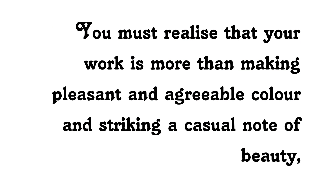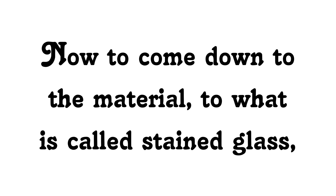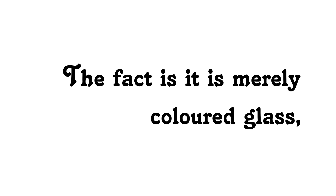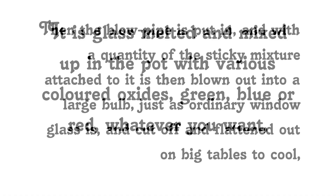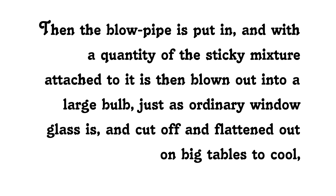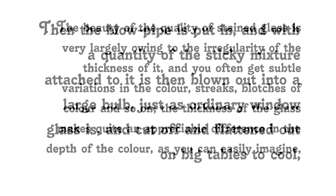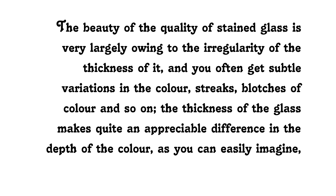Now to come down to the material — to what is called stained glass. The fact is it is merely coloured glass. It is glass melted and mixed up in the pot with various coloured oxides: green, blue or red, whatever you want. Then the blowpipe is put in, and with a quantity of the sticky mixture attached to it, it is blown out into a large bulb, just as ordinary window glass is, and cut off and flattened out on big tables to cool. The beauty of the quality of stained glass is very largely owing to the irregularity of the thickness of it, and you often get subtle variations in the colour — streaks, blotches of colour, and so on. One selects from the large sheet of glass the particular piece which contains a tone of colour one wishes to use.